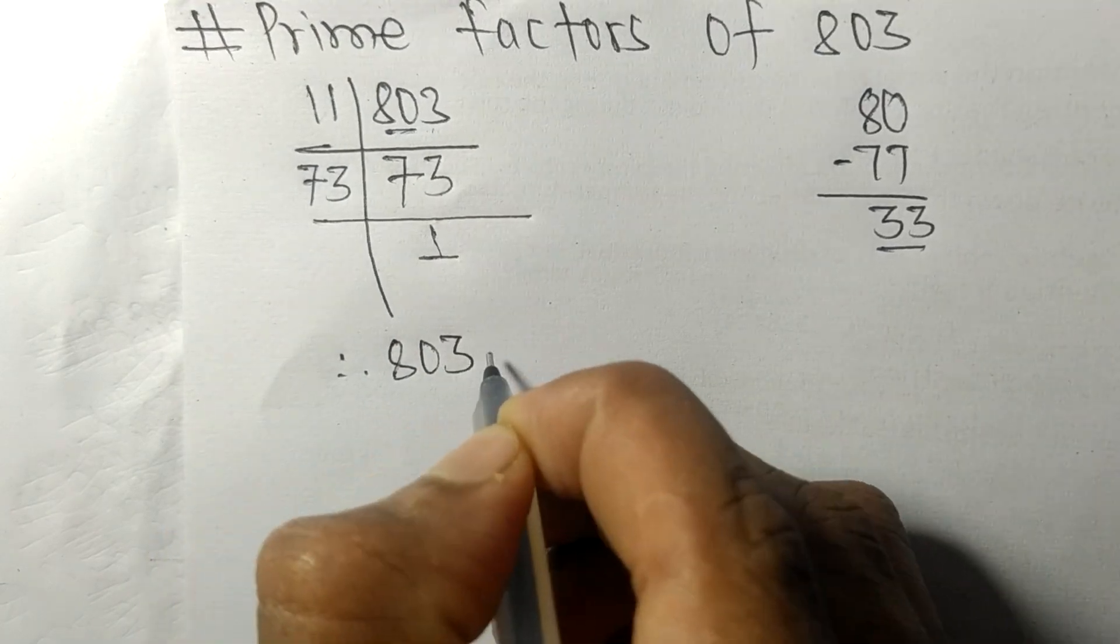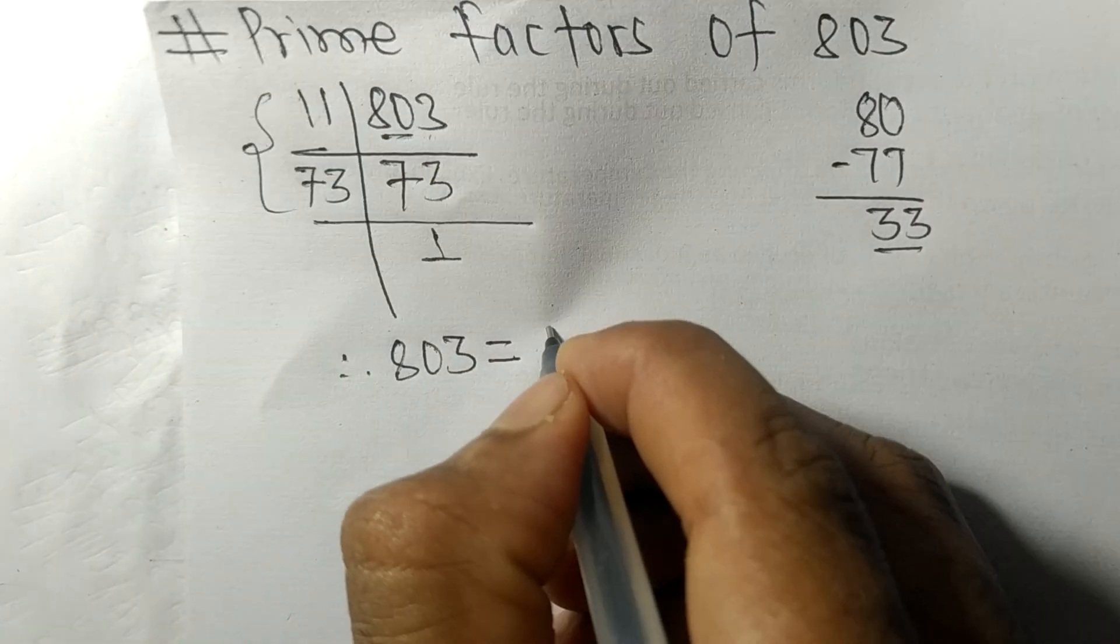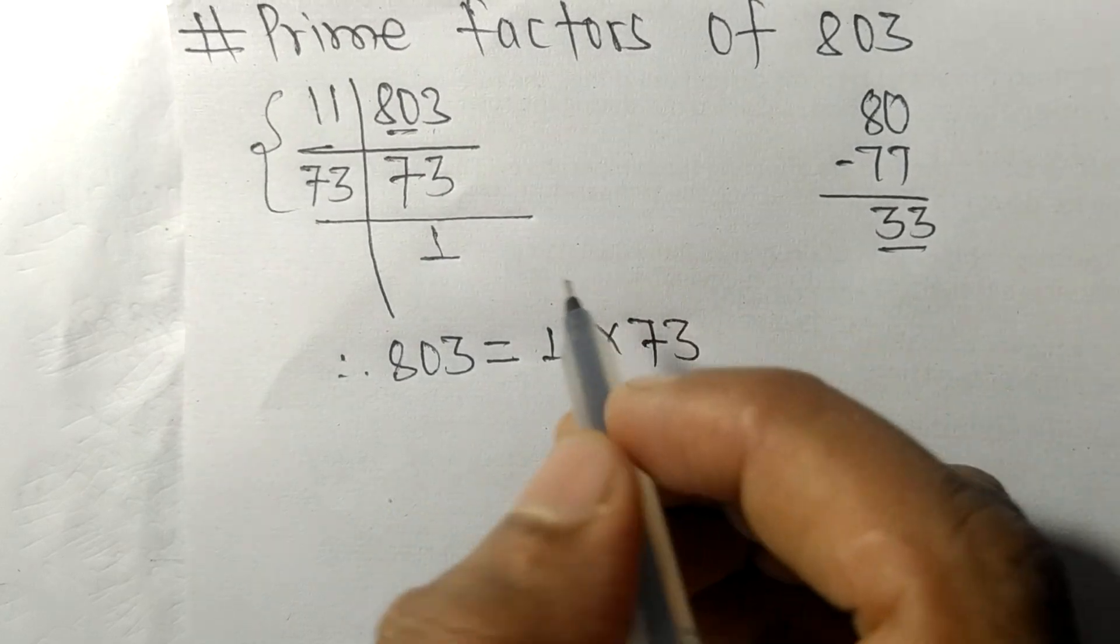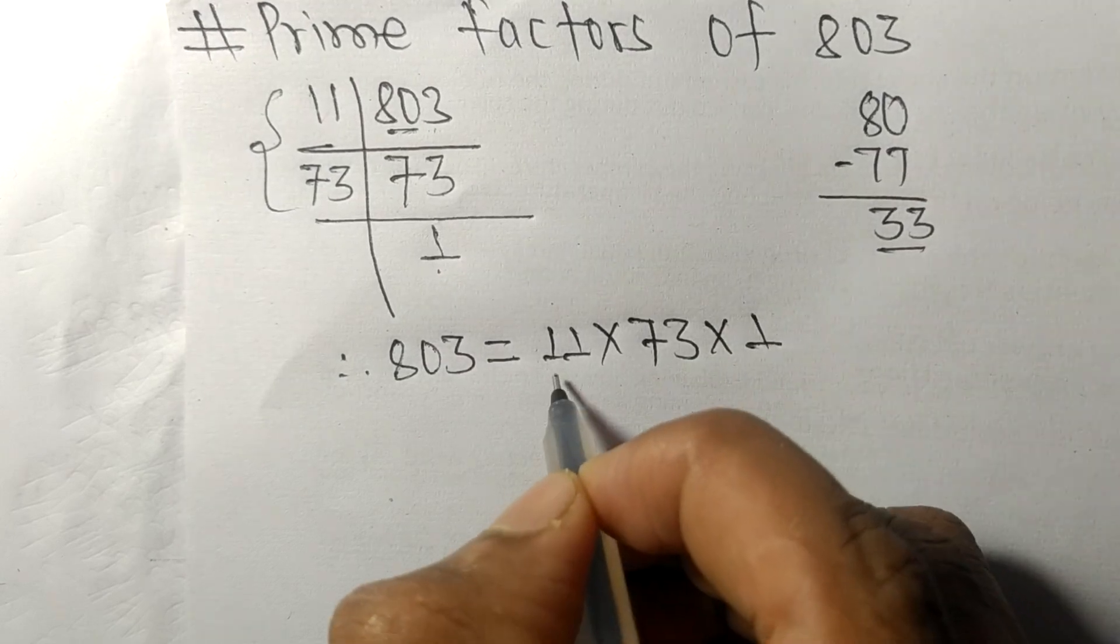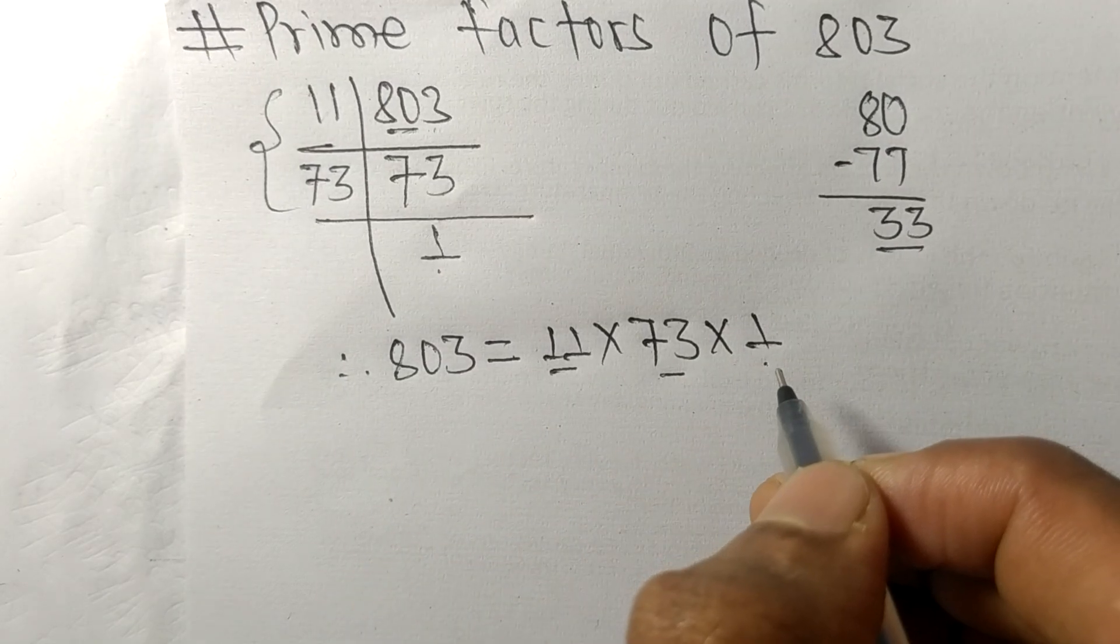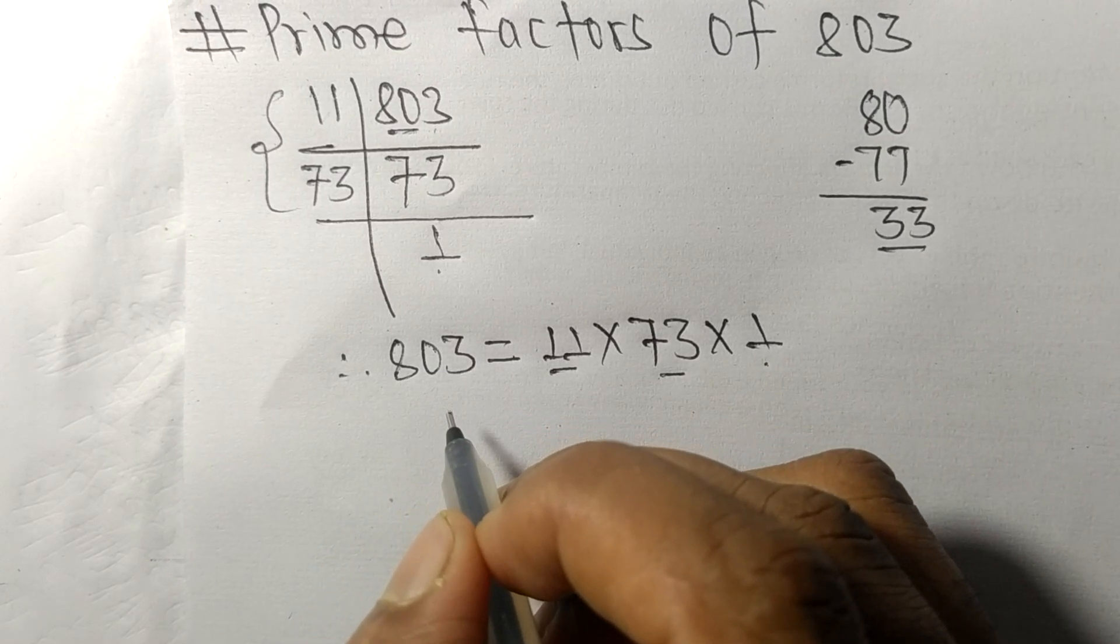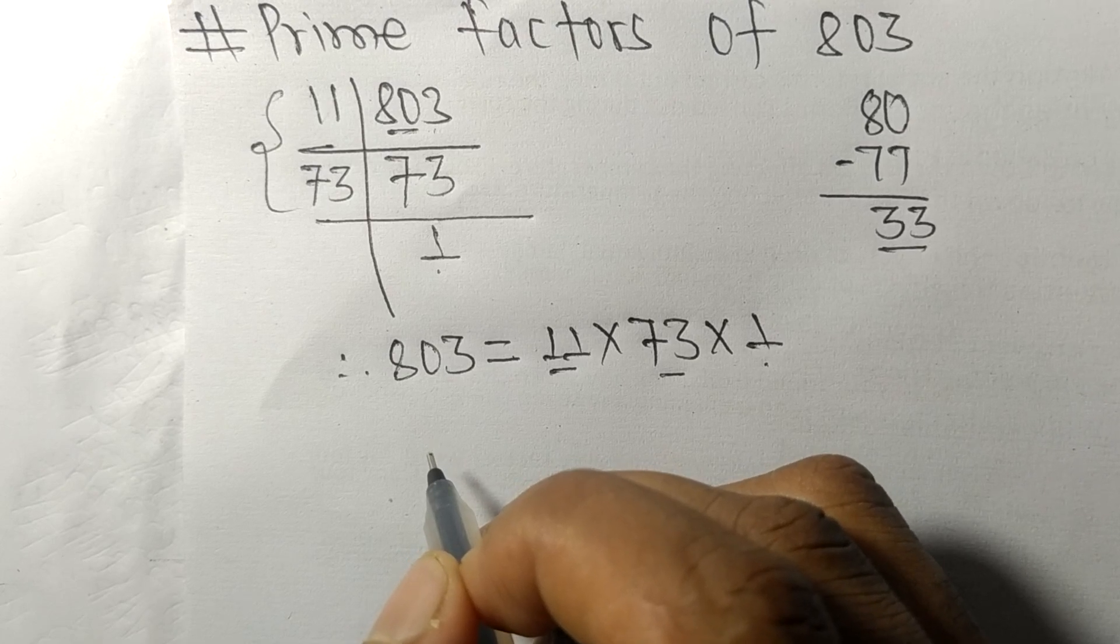Therefore, 803 is equal to—from this side it is 11 times 73, from here it is 1—so 11, 73, and 1 are the prime factors of 803. So this much for today and thanks for watching.